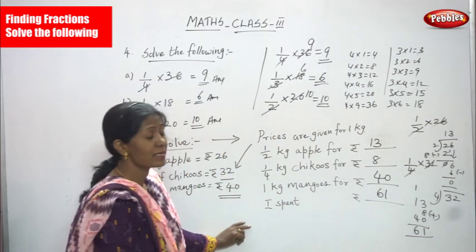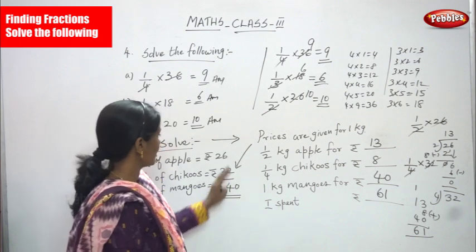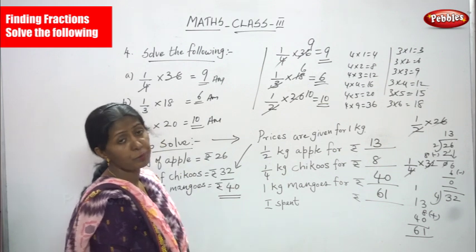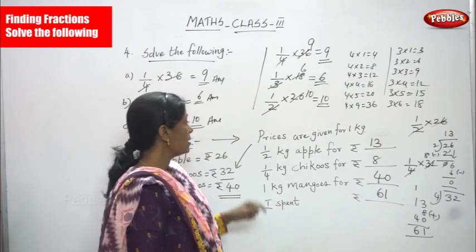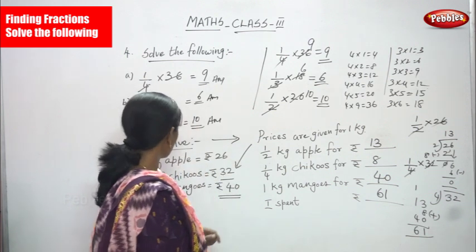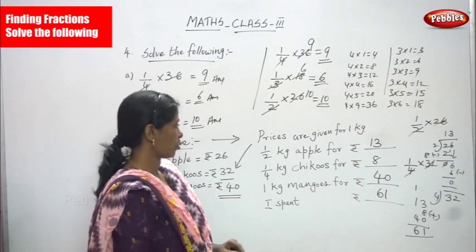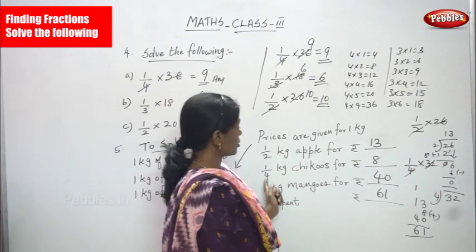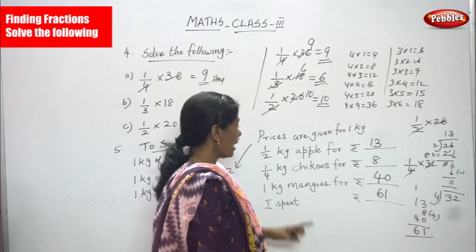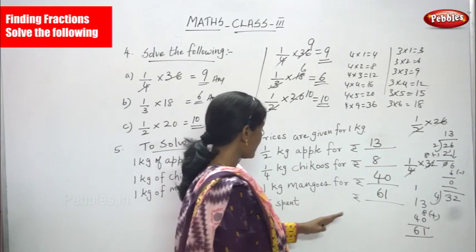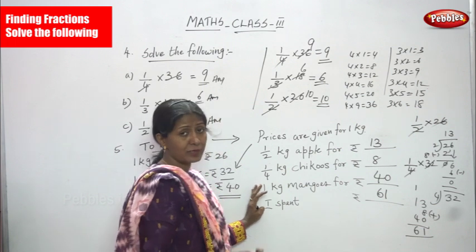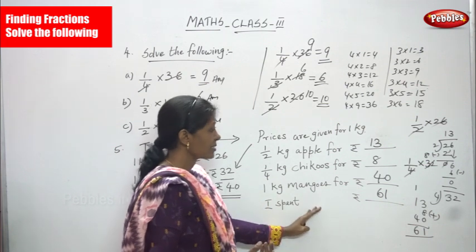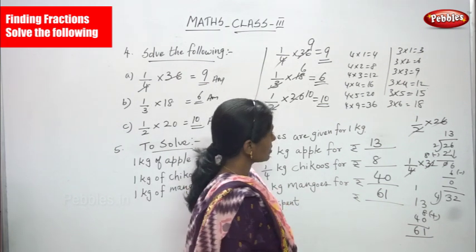To summarize the word problem: 1 kg of apple is 26 rupees, 1 kg of chikus is 32 rupees, 1 kg of mangoes is 40 rupees. From that: half kg of apple = rupees 13, quarter kg of chikus = rupees 8, and 1 kg of mangoes = rupees 40 (written as is).